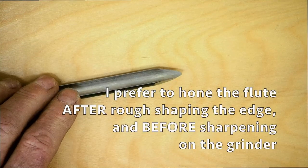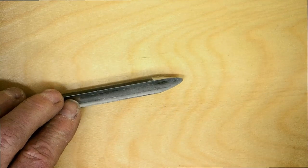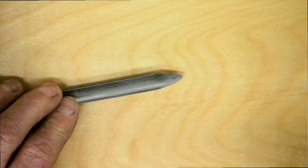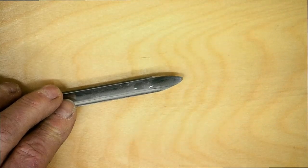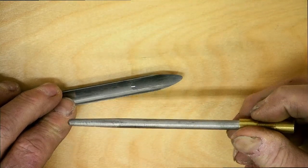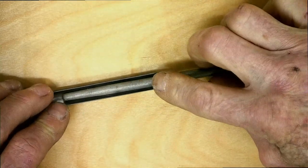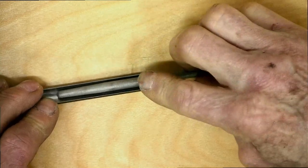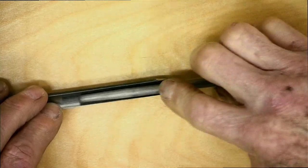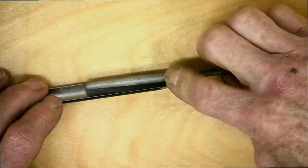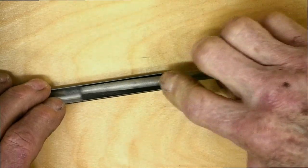I also like to hone the inside of the flutes of my gouges, believing that the sharpest edge is the intersection of two smooth planes. I'll put a little drop of lapping fluid in there and I'm using this round pen file, just a round diamond file, holding it firmly in the flute and rolling the tool as I move the hone in the flute to get the entire flute smooth.